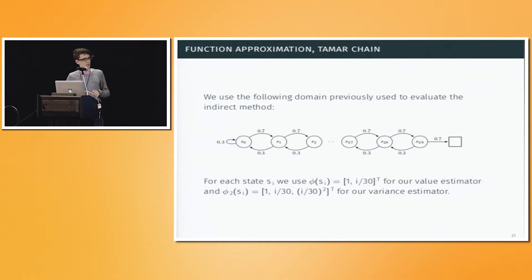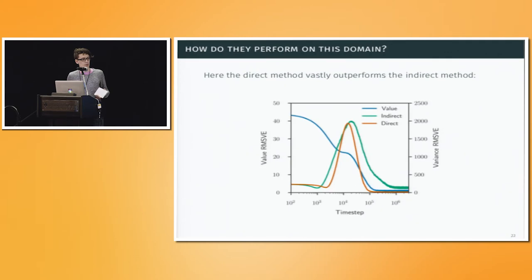We rescaled them, because we were having problems getting VTD to converge at all, by dividing by the total number of states. And then, when it came to estimating the variance, they augment the features they use for the value function with a quadratic one, where instead of it being 1 over 30, it's going to be 1 over 30 squared, and so on.